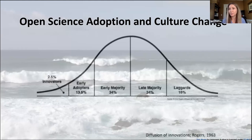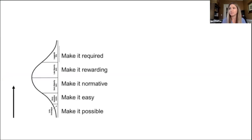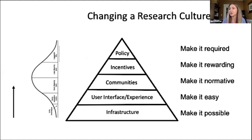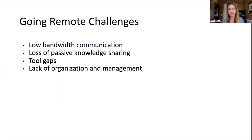You may have seen this chart before of how culture change really does happen. It begins early on with innovators moving towards the early adopters, majority, late majority, and then the laggards. When you flip it on its side and look at the criteria that it takes in this climate to make that culture change, it's about establishing the infrastructure to make that possible. That's how you get the innovators moving forward to create user interfaces and user experiences that make it easy for someone to begin these workflows with lower burdens to entry.